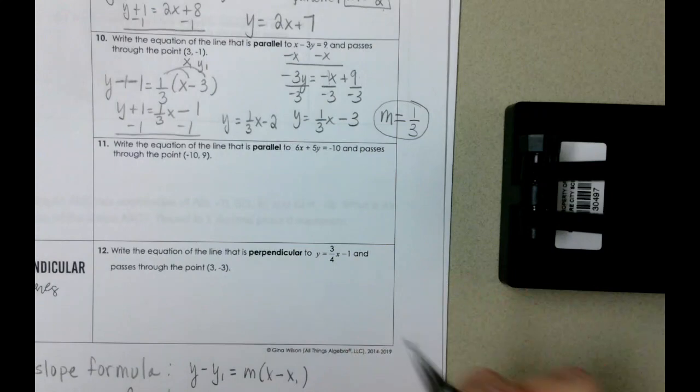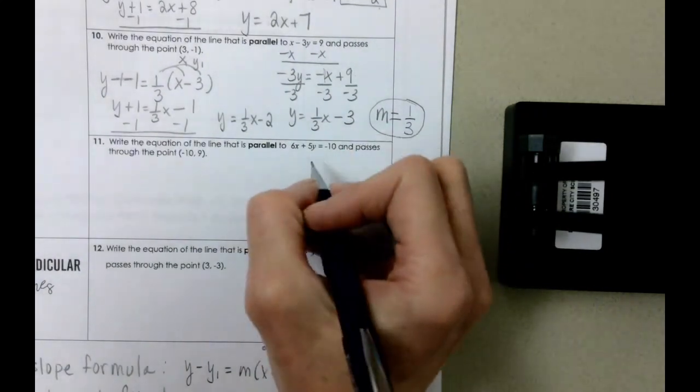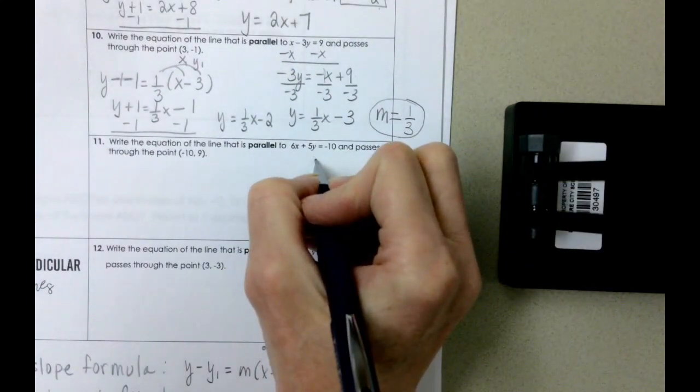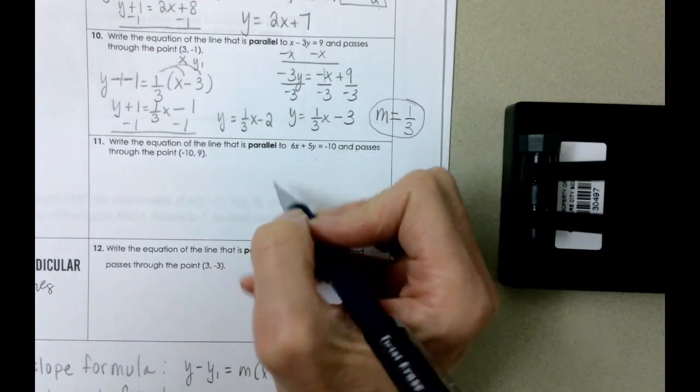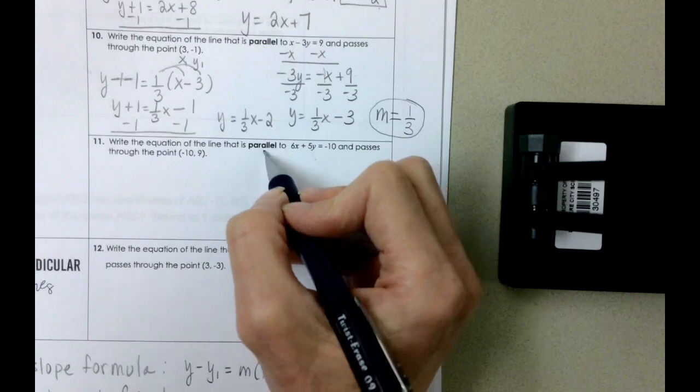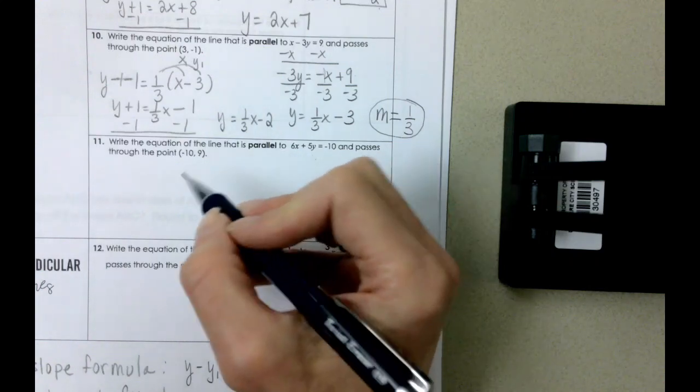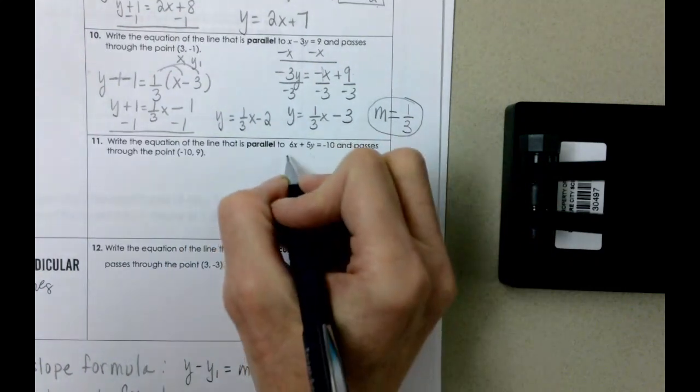So same idea on problem number 11 here. We need to put this equation into slope intercept form in order to determine the slope because we're trying to find the equation that's parallel and passes through this given point. So we're going to solve for y.